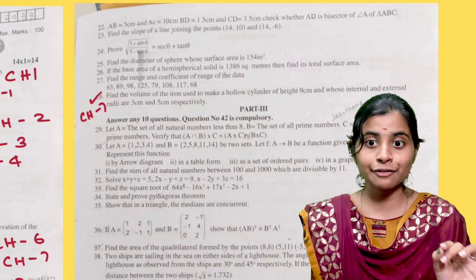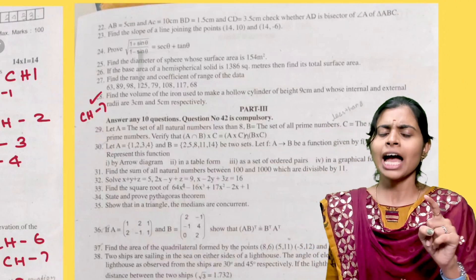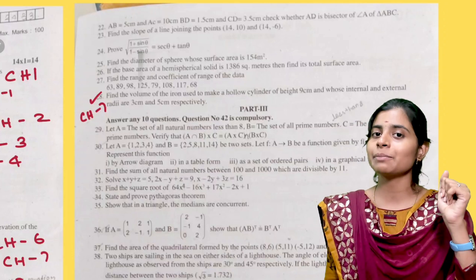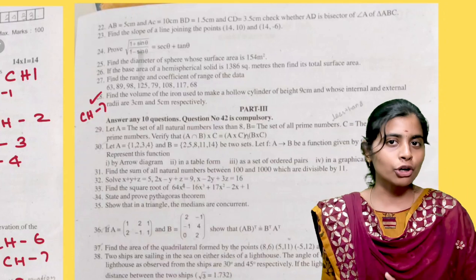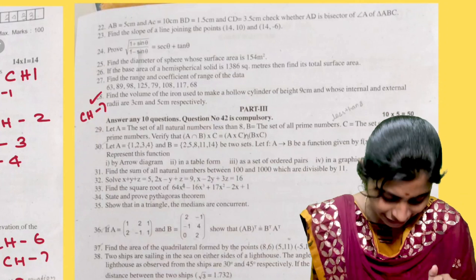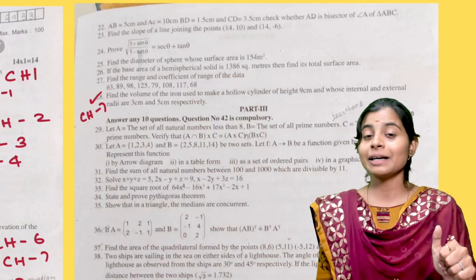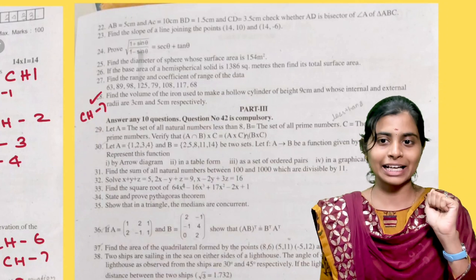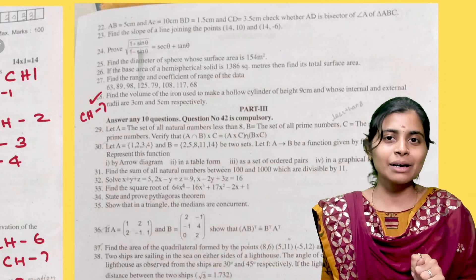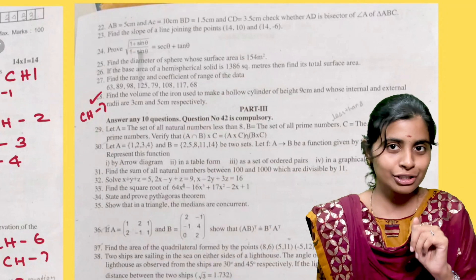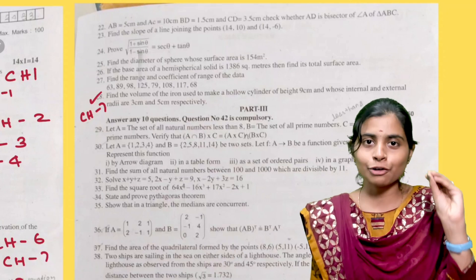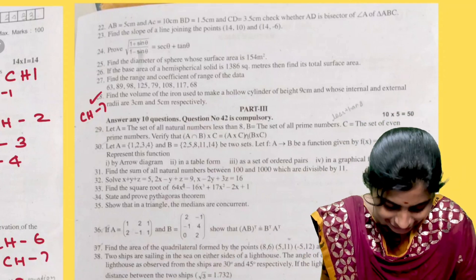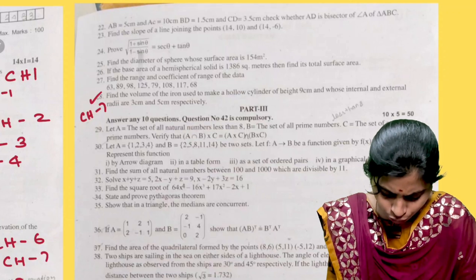In the half-yearly study plan video, you can see these chapters. So if you are following that study plan, please comment. Find the volume — internal and external radius. That's easy, 2 marks.